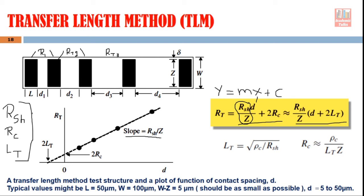There are many limitations, but we are going to discuss one particular limitation today — that limitation is regarding the sheet resistance value. When we use this equation, the main assumption was that the sheet resistance is the same throughout the channel. But practically this is not so: the sheet resistance between the contacts and just under the contact is different. This is because when we fabricate the metal contact, sometimes we perform an annealing (heating) step.